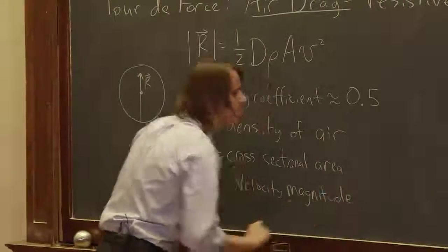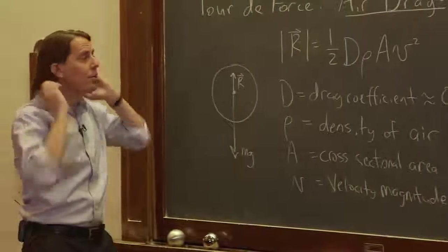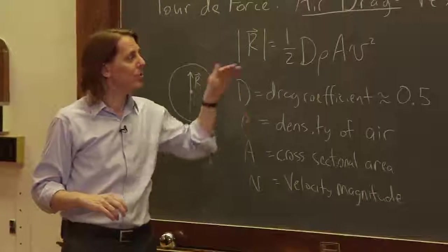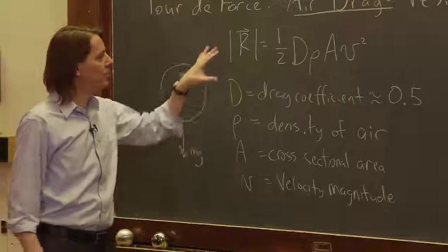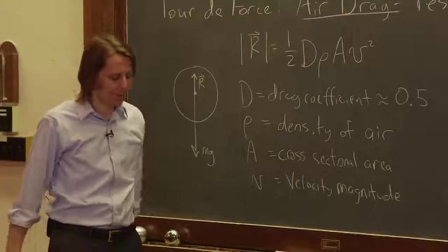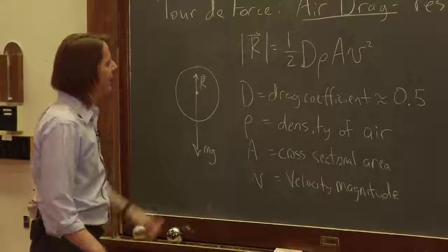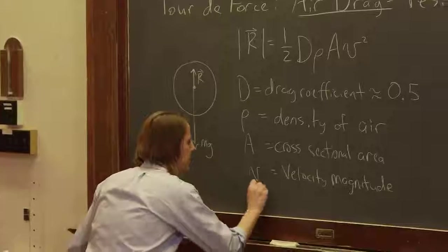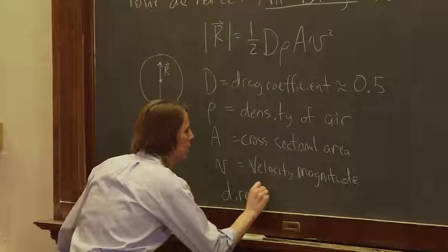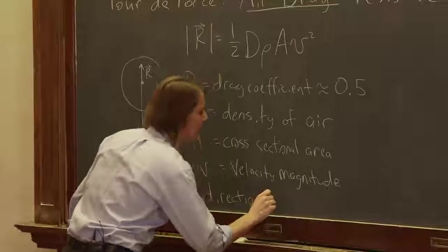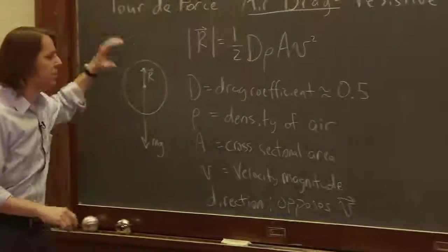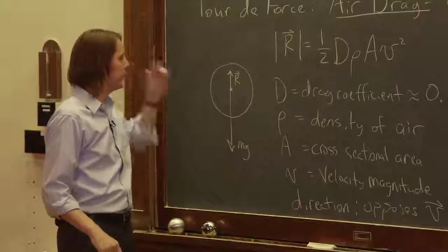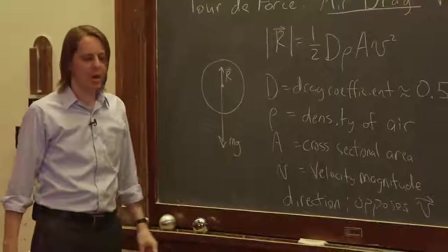We're not going to go through and derive where this formula comes from, it's fluid mechanics, very complicated. But we know that this is a pretty accurate representation of the magnitude of the force. The direction is that it opposes v, it opposes the motion. That's why I drew the force up.